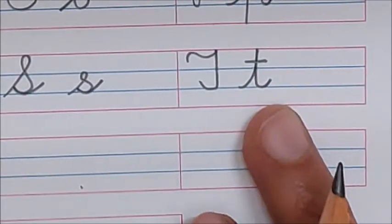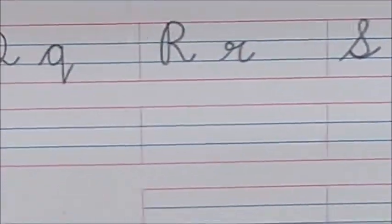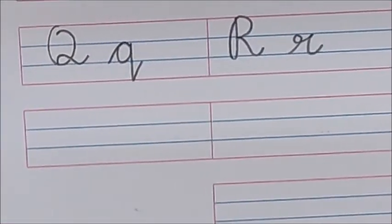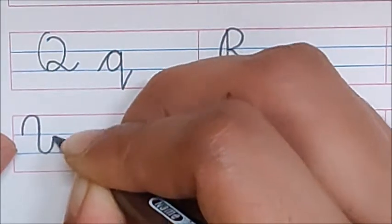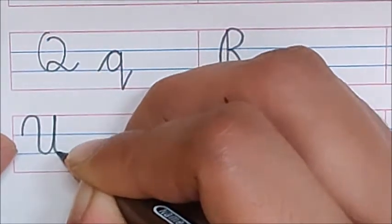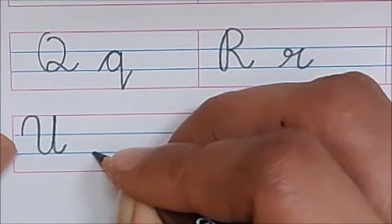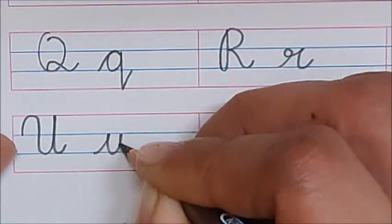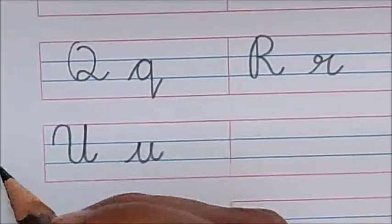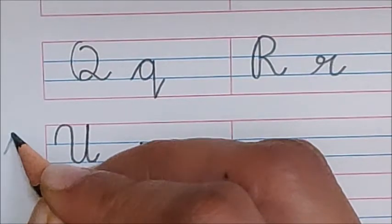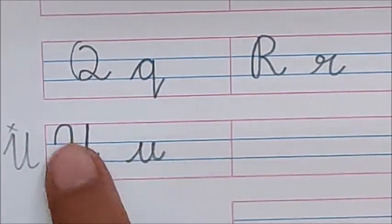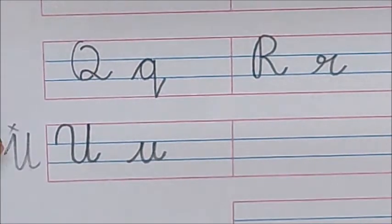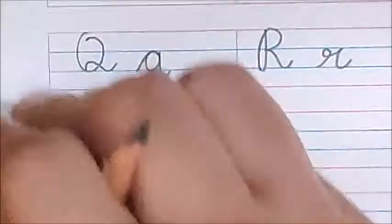What comes after T? U. Go to the next row. Go up, turn. See, I have turned. Now, again, go up. Come back on the same line. And make a tail. U. Children, don't write U like this. Don't make it pointed. I am rubbing it. It's wrong.